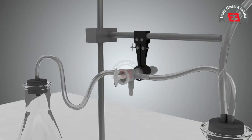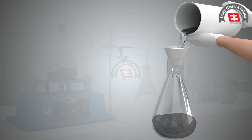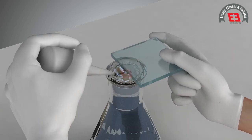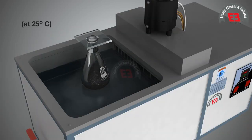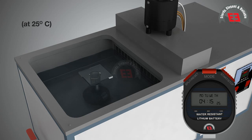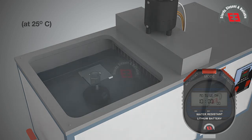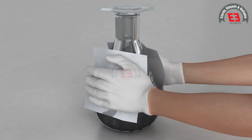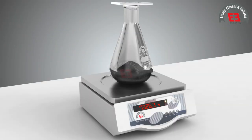After the time period, the vacuum is released with the bleed valve. The flask is then filled completely with water using a cover plate without entrapping air beneath it. The flask is placed in the constant temperature water bath for 10 minutes plus or minus 1 minute to stabilize the temperature at 25 degrees Celsius without submerging the top of the flask. The exterior of the flask and cover plate is wiped and dried. The mass of the flask, cover plate, and contents completely filled with water is determined as E, equal to 7326.3 grams.